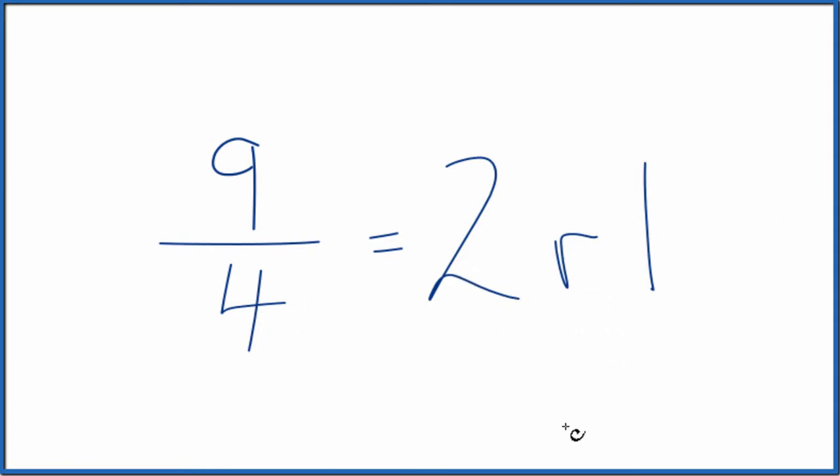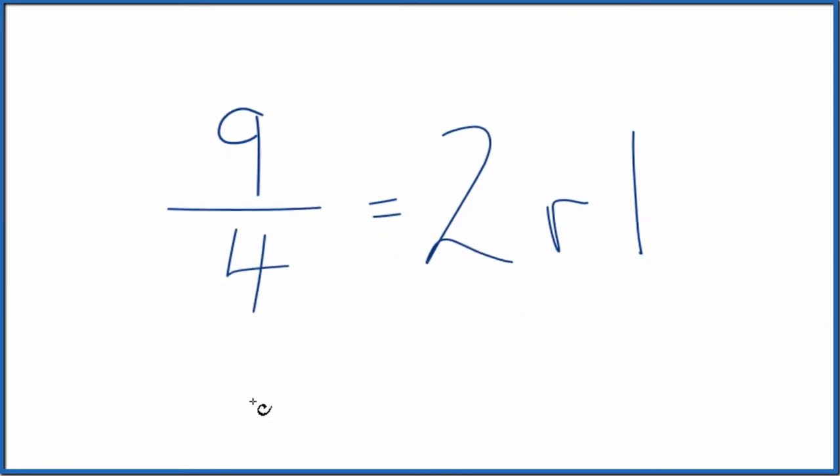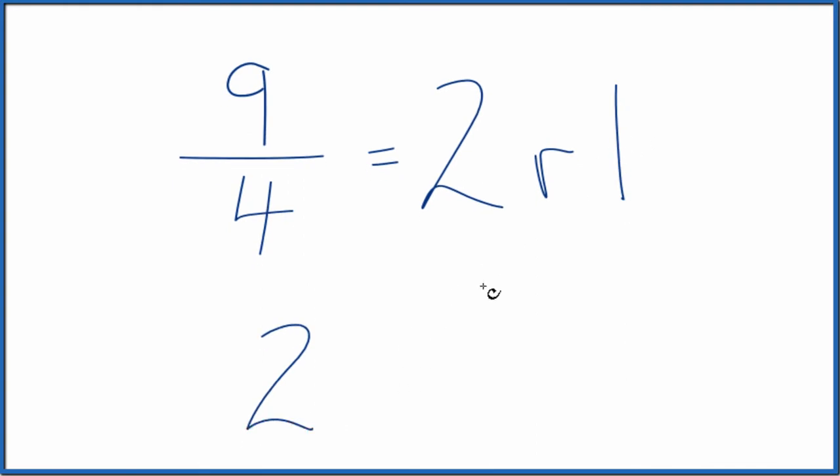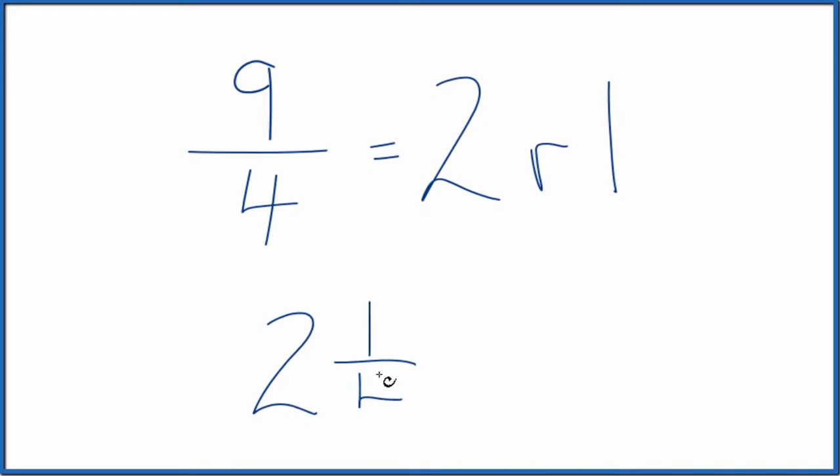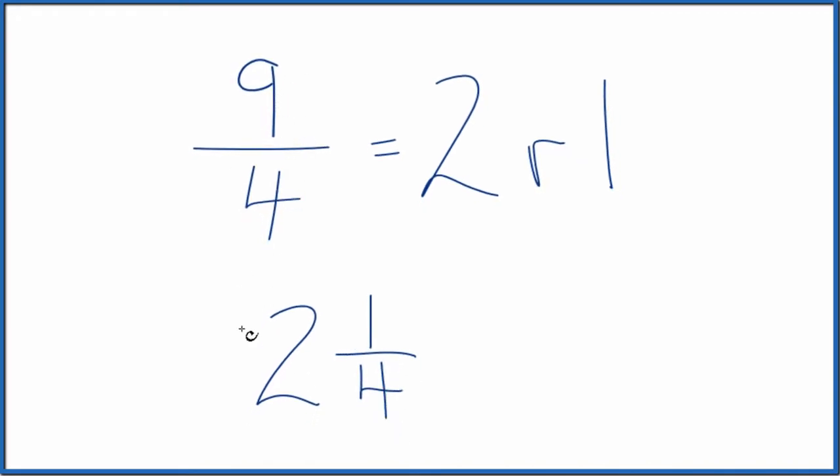So once we have this, then we can write nine fourths as a mixed number. We'll take two. That's the whole number. Then we take the remainder and we put that over the original denominator. So the fraction nine fourths equals the mixed number two and one fourth.